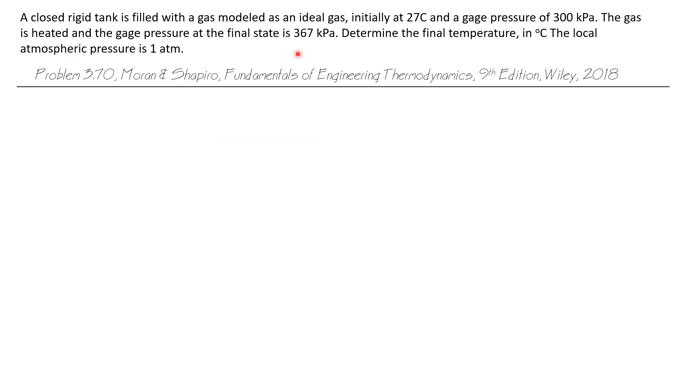A closed rigid tank is filled with a gas modeled as an ideal gas, initially at 27 degrees C and a gauge pressure of 300 kilopascals. The gas is heated, and the gauge pressure at the final state is 367 kilopascals. Determine the final temperature in degrees C. The local atmospheric pressure is one atmosphere.